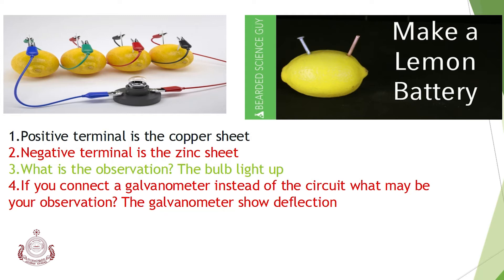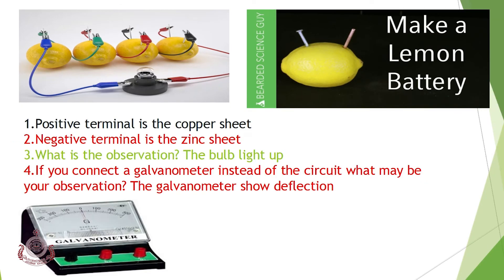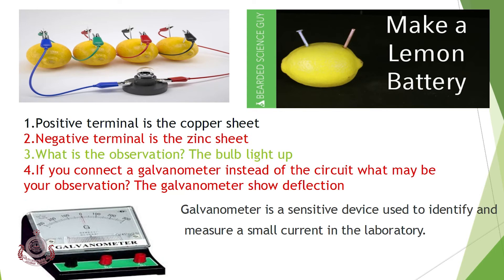If you connect a galvanometer instead of the bulb in the circuit, the galvanometer will show deflection. A galvanometer is a sensitive device used to identify and measure a small current in the laboratory.